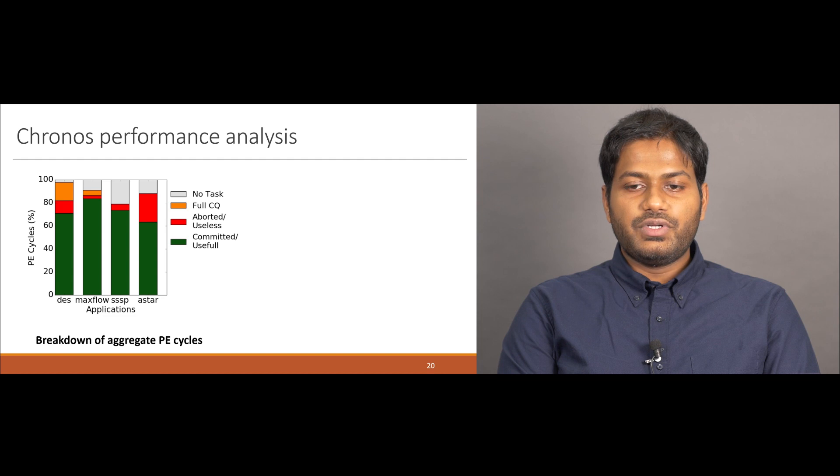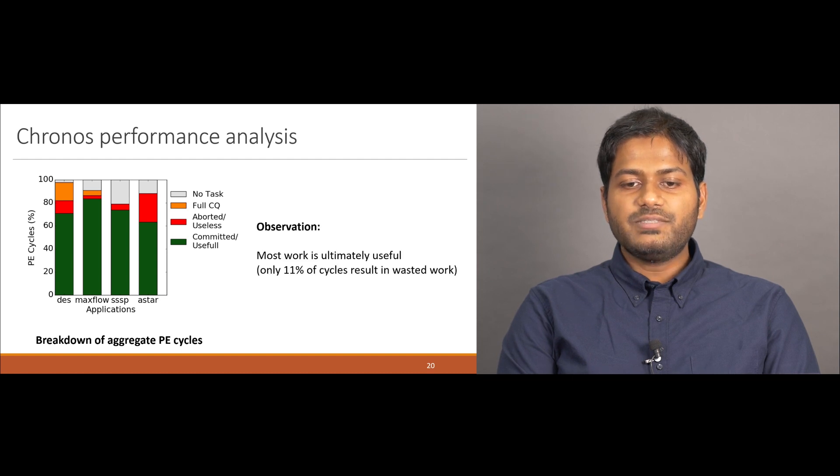To illustrate how efficient Kronos is, this diagram shows how each PE spends its cycles, based on whether they were doing work that was ultimately committed and useful, or whether they were doing work that was ultimately aborted and wasted. Also, it shows the amount of cycles that a PE could not do any work because the commit queue was full, or no task was available. This plot shows that only 11% of the cycles are actually wasted, and most work is ultimately useful.